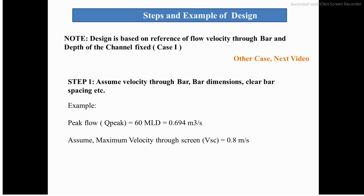We assume the maximum velocity through the screen, Vsc = 0.8 m/s. It should not be too low, as sedimentation can occur, and not too high, so that large particles do not pass through. In step 2, we calculate the clear area using Q = A × Vsc.